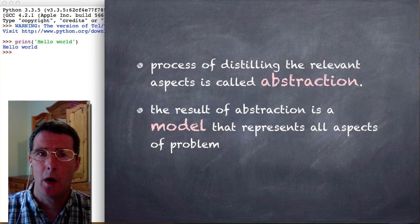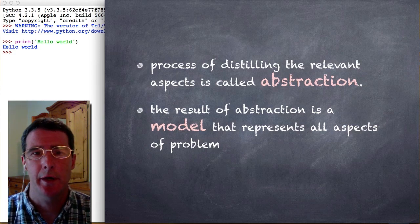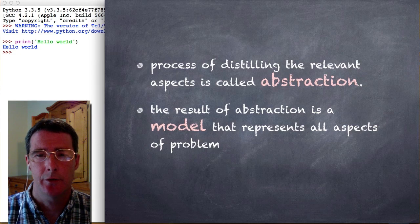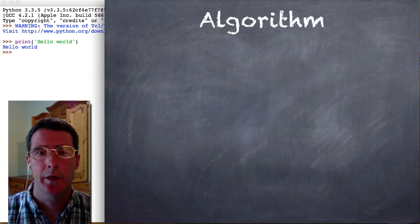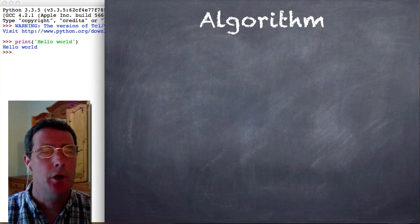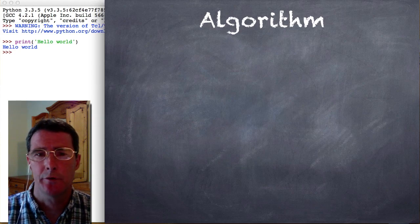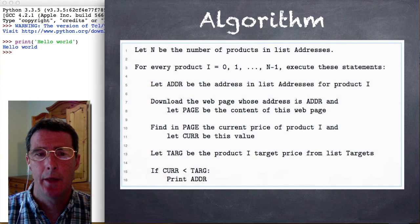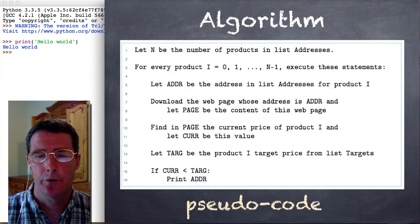So the output from this, after we've done this abstraction, is a model. This represents the aspects of the problem that we need to solve. So once we have a model, we go ahead and generate an algorithm to solve our problem.